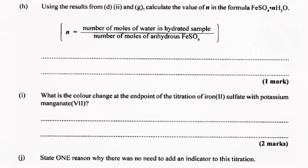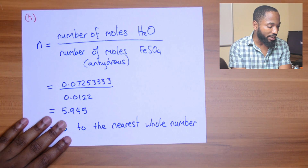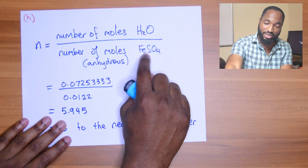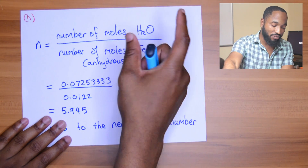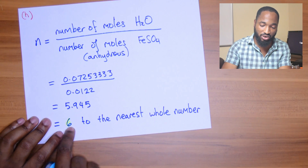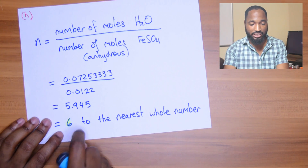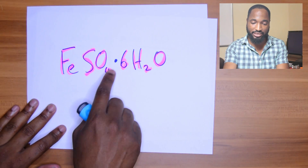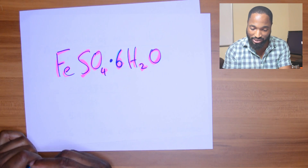Part h: now we find n. n is the number of moles of water in the hydrated sample divided by the number of moles of anhydrous FeSO4. This works because the ratio is one mole of FeSO4 to n moles of water. Plug in your values and you get 5.945, which rounds to 6 to the nearest whole number - because n must be a whole number. So the formula is FeSO4·6H2O. We took that whole journey just to find that the answer is 6.